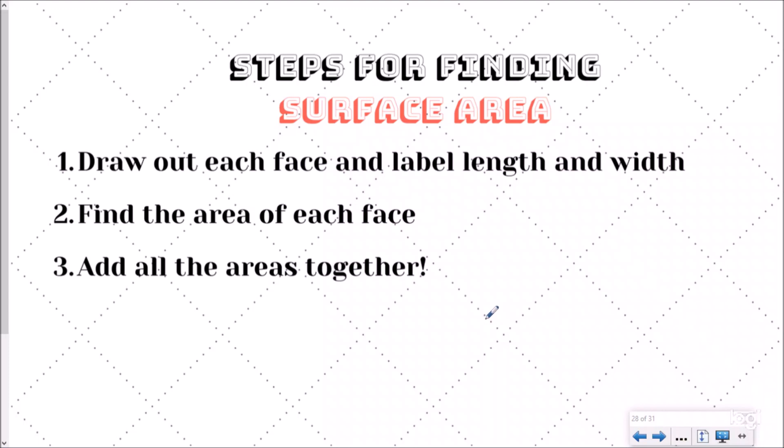But we are going to review the steps for finding surface area, which is: draw out each face and label the length and the width, or in this case today, the base and the height for triangles. Find the area of each face, and then add all the areas together.